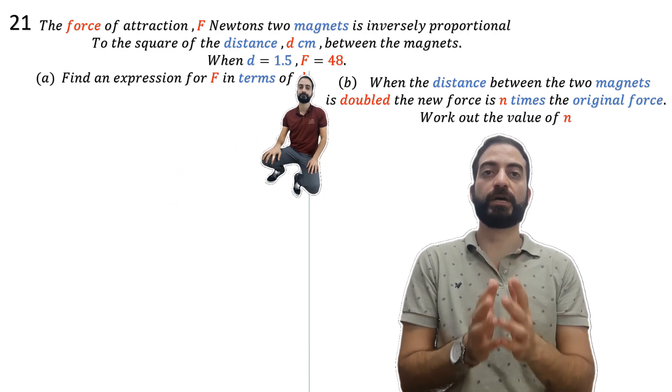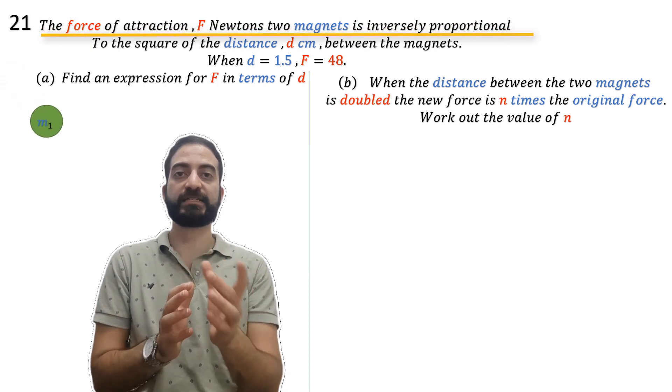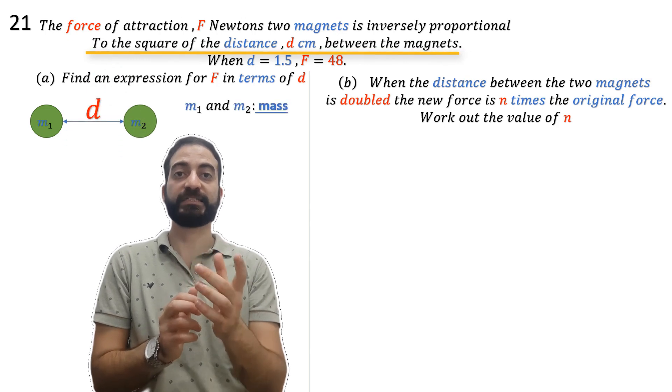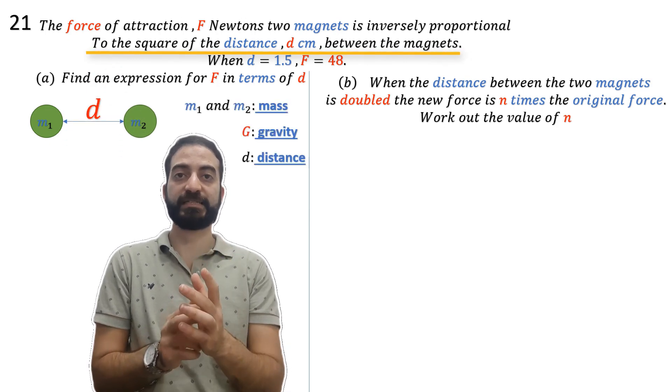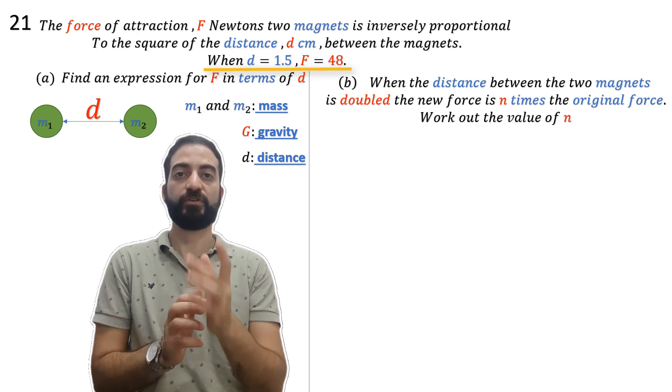In this question, the force of attraction F between two magnets is inversely proportional to the square of the distance d between the magnets. When d equals 1.5, F equals 48.